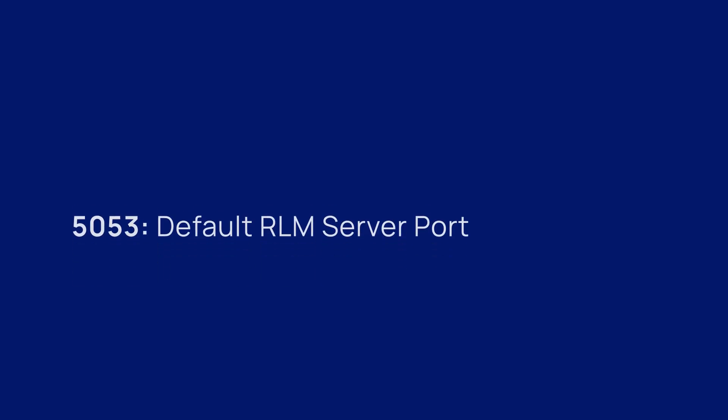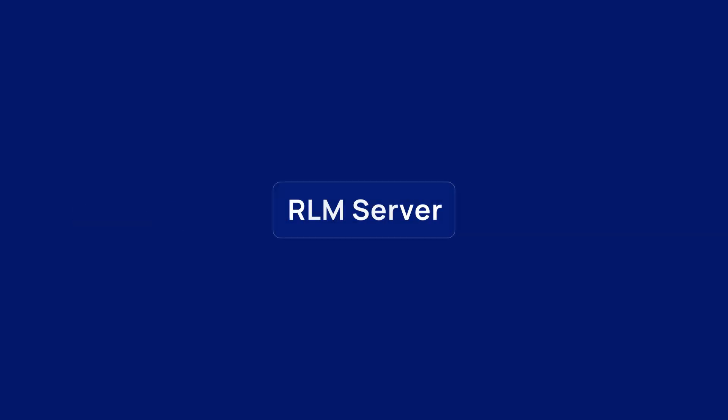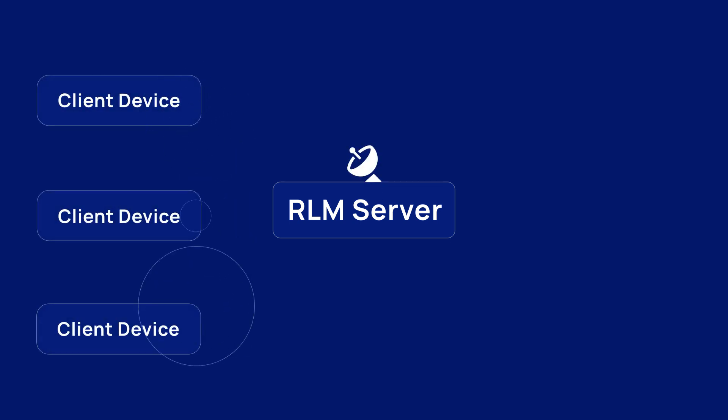This video will cover what ports the RLM license server will bind to and use during operation. The first port is the RLM server port. By default, this runs on port 5053, though we will go over how to change this port for your server. The RLM server acts as a handler process to listen for client devices making license queries, such as a license checkout.